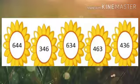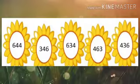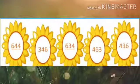Numbers are 644, 346, 634, 463 and 436. To find out the greatest number we have to see the 100th place first. That is 6, 3, 6, 4 and 4 are on the 100th place. Here we can see 6 is the greatest digit. But we also see there are two numbers with the same digit: 644 and 634. So we need to see the digit in the 10th place. That is 4 and 3. 4 is greater than 3. So the number 644 is the greatest number.